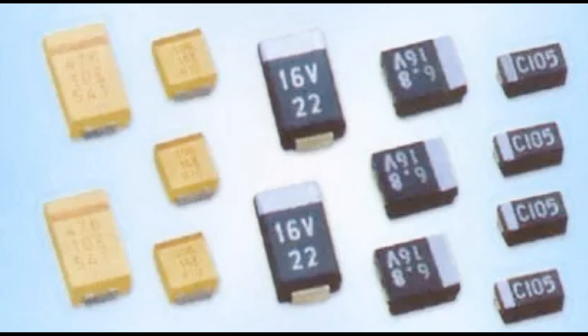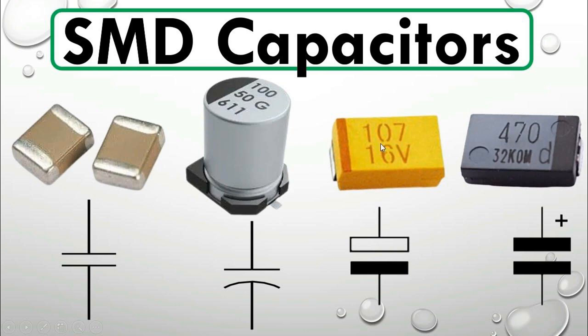Voltage regulation: Capacitors contribute to voltage regulation by helping to maintain a consistent voltage level across a load. They can compensate for rapid changes in current demand, ensuring that the voltage remains within acceptable limits. The basic principle behind filtering and smoothing with capacitors lies in their ability to store and release electrical energy, mitigating voltage fluctuations and providing a more reliable and steady power source for electronic circuits and devices.